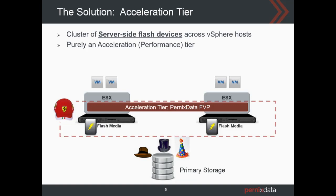The beauty of this solution is it doesn't matter what storage you have. You can continue to use your main primary storage, use your ESX host, buy some flash, put it in, build this tier, and start seeing the acceleration. I don't want to dive into details because colleagues have already given presentations on this. There are two presentations given yesterday evening and today afternoon — I would highly encourage you guys to check those out. What I want to show today is some data that will prove the potential of this solution.